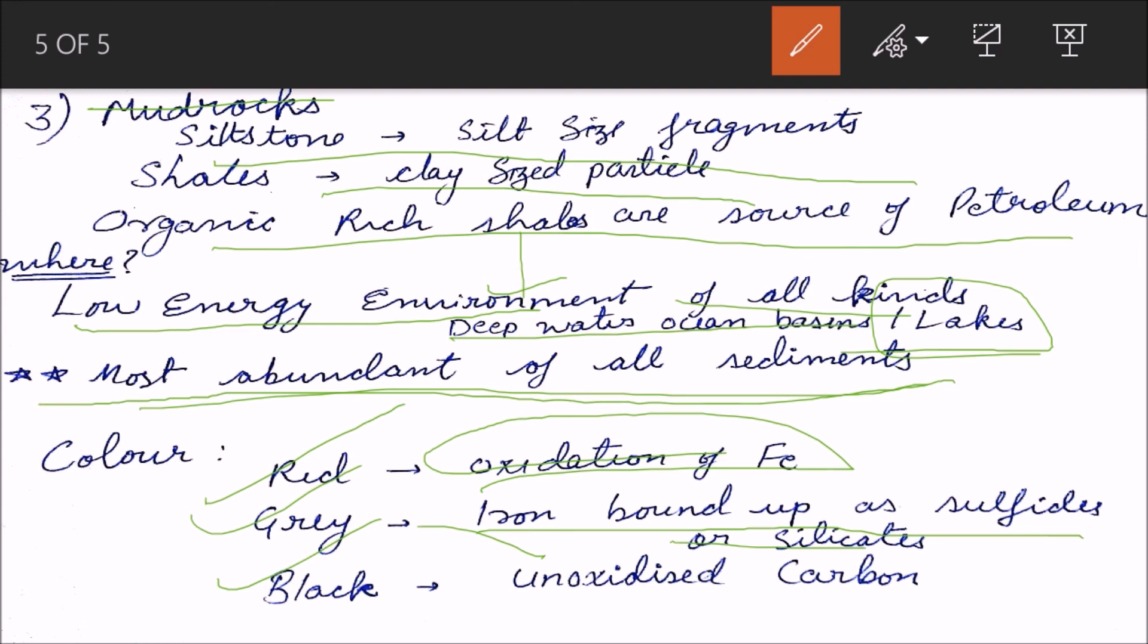Black is unoxidized carbon which is actually black in color, as we can also see in the coal and peat. So this black color is due to unoxidized carbon.